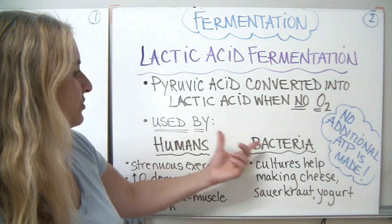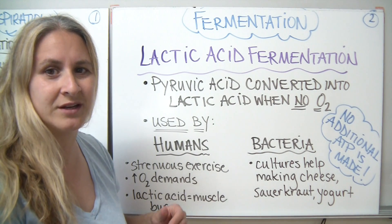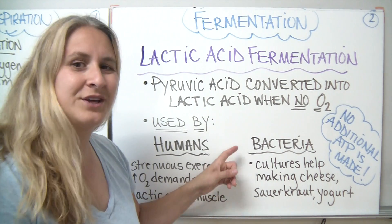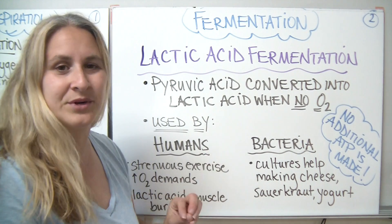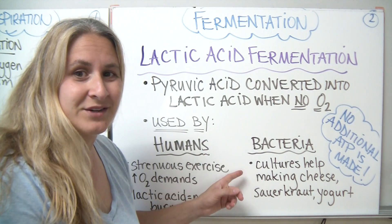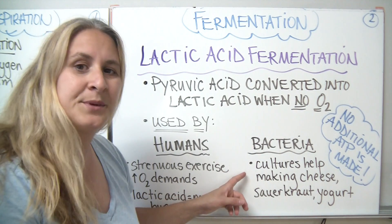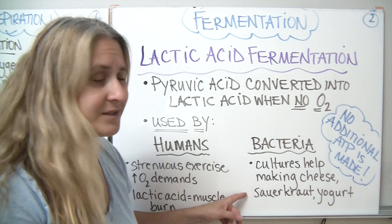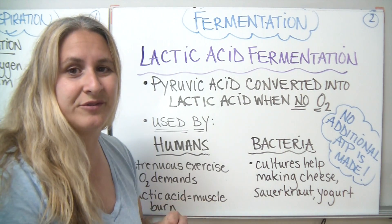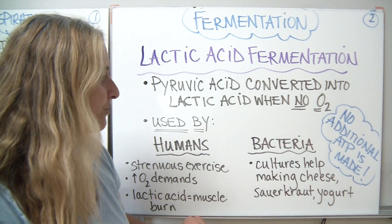There are two main organisms that carry out lactic acid fermentation. The first is bacteria. Bacteria are experts at carrying out lactic acid fermentation. We use cultures of bacteria — simple solutions of lots of bacteria growing — to help us make cheese, sauerkraut, and even yogurt. That lactic acid gives those food products a tart sort of flavor and helps make those wonderful products.